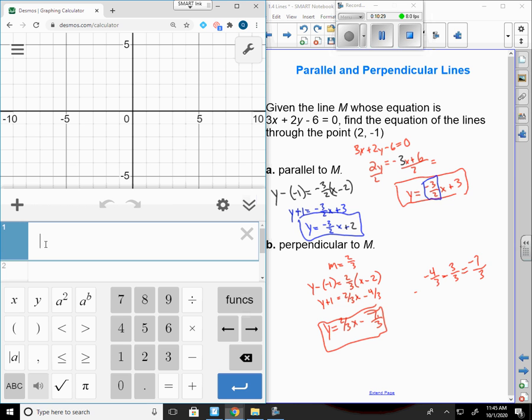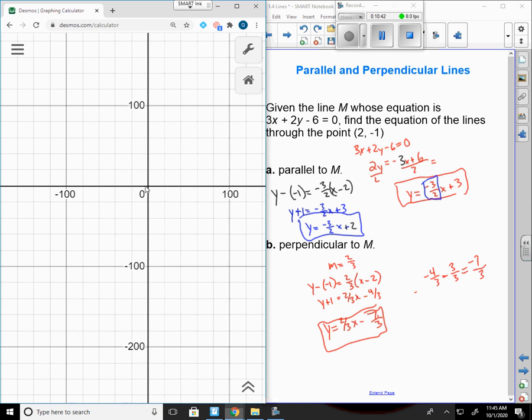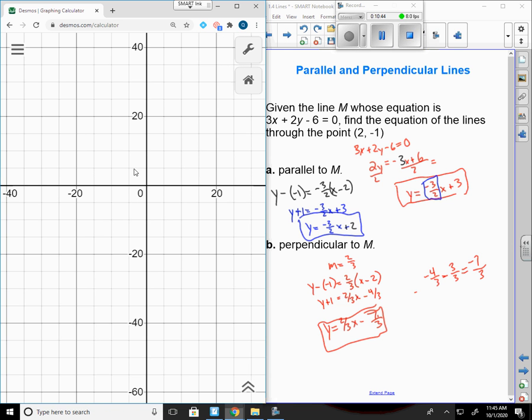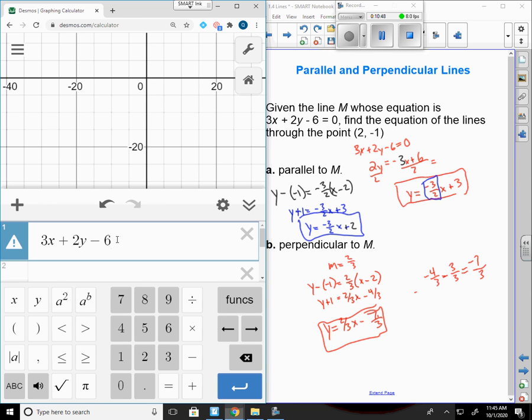So if I wanted to type that in, 3x plus 2y minus 6. Oh, I have to set it equal to 0. Equals 0. That's right.